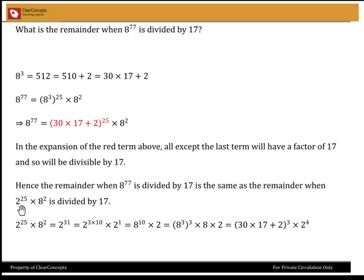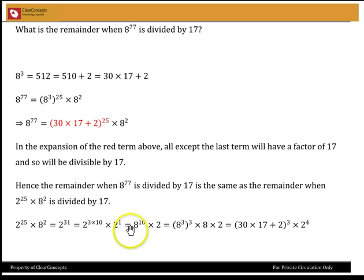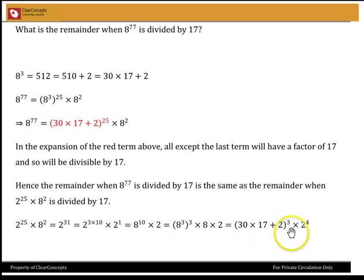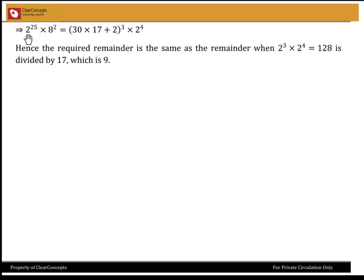Calculating 2 to the power 25 can get quite problematic, so let's try a different manner. I know that 8 is 2 cubed, so 8 squared is 2 to the power 6. So 2 to the power 25 times 8 squared is 2 to the power 31. I can write that as 2 to the power 3, whole to the power 10, times 2 to the power 1 — which is 8 to the power 10 times 2. That in turn can be written as 8 cubed, whole to the power 3, times 8 times 2. Now I had a value for 8 cubed from the first step, so I can replace 8 cubed with 30 times 17 plus 2. Then I have 8 times 2, which is 2 to the power 4. So 2 to the power 25 times 8 squared is 30 times 17 plus 2, whole cubed, times 2 to the power 4.